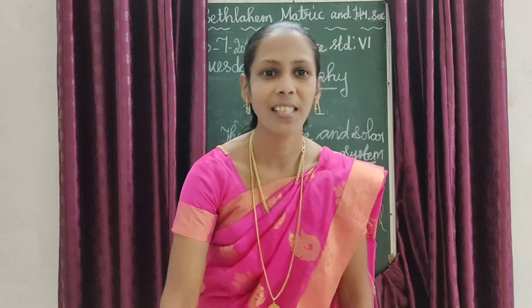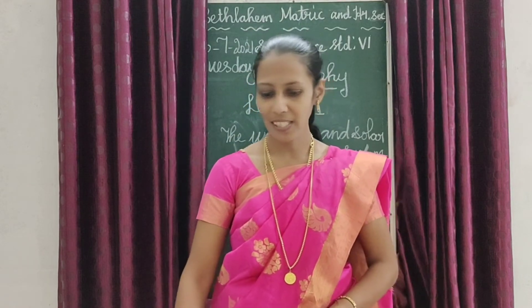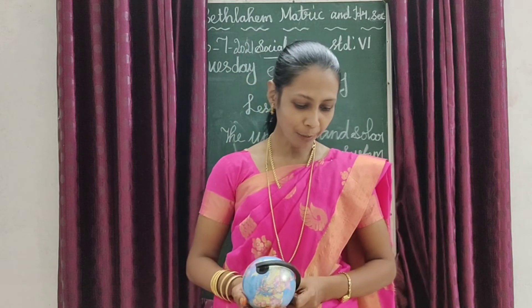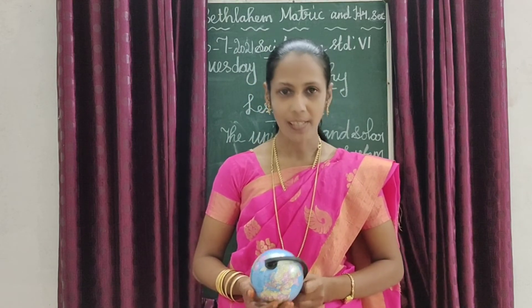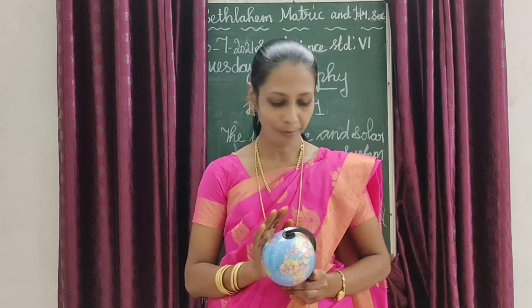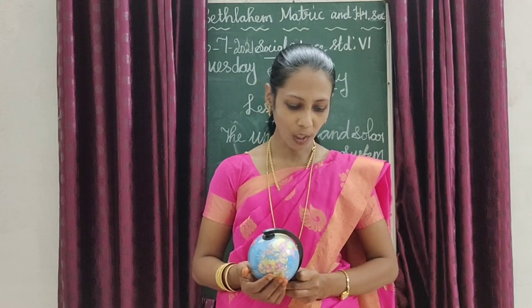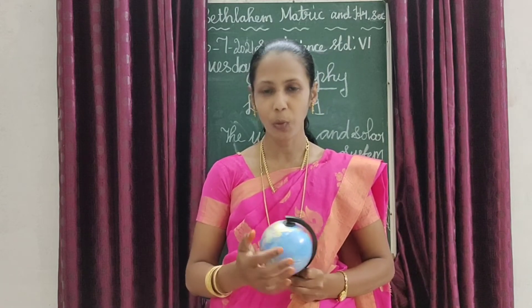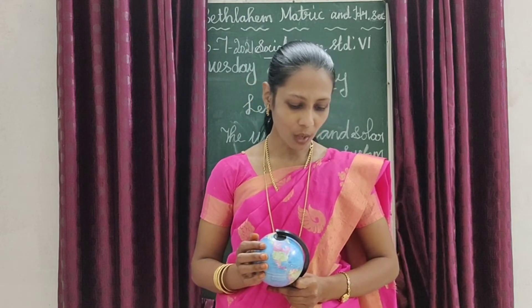We are living on Earth. Earth is the third planet from the sun. This is a globe — it is the model of the earth. Earth is the fifth largest planet in the solar system, and it is called the blue planet because it appears blue in color.